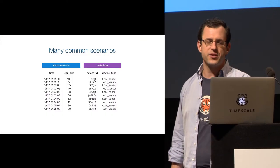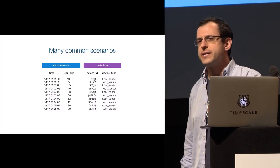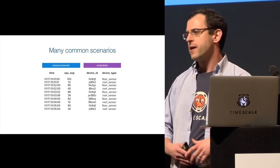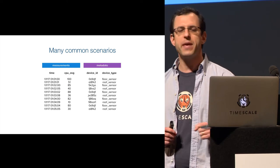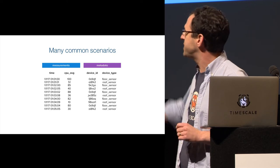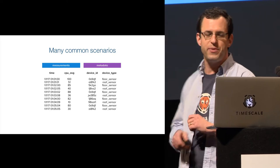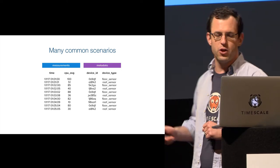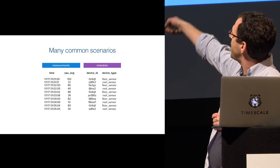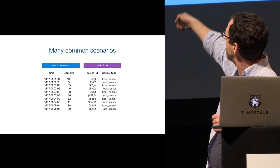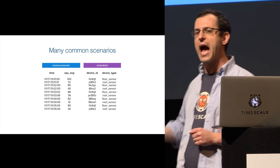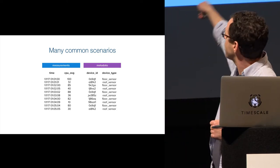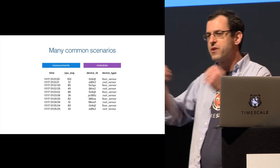Now, if you look at a lot of time series databases, they have a very specific way of storing this. They would define a time series as a particular metric, like CPU, associated with a set of tags, a unique set of tags. So if you look at this picture, I have a bunch of metrics, and then I have a bunch of combinations, and you might look at this and say I have about 10 time series here.